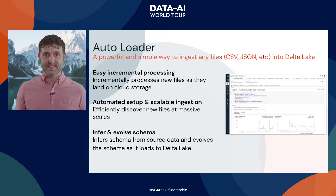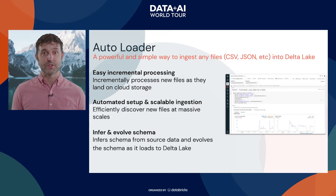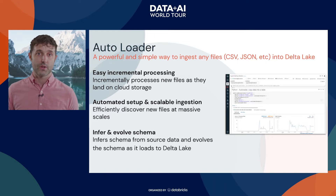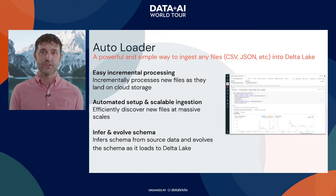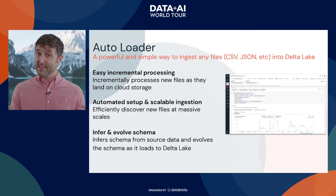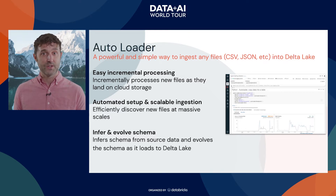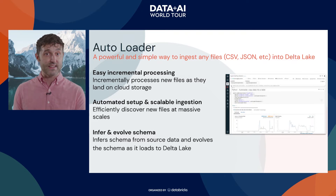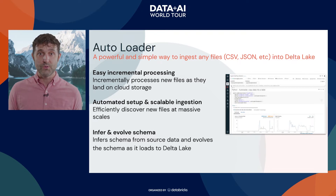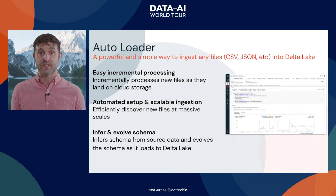Ingestion isn't the end of it — you also need to understand the schema of these files, and that's often changing over time. Autoloader has powerful schema inference where it can understand the schema of any given file, take them all together to come up with a grand unified schema across data sources, and even handle schema evolution as things change. That evolution is tunable: you can decide whether new columns automatically get added to your data lake, or if you want to raise alarms and have engineers come in when things are shifting.